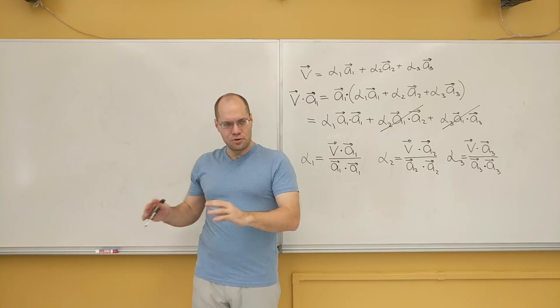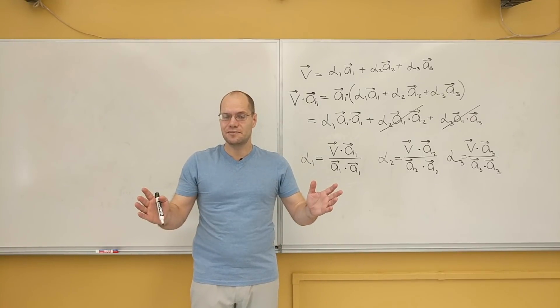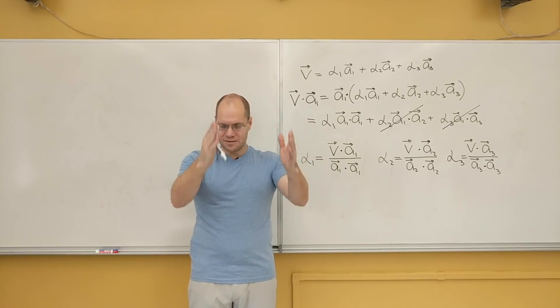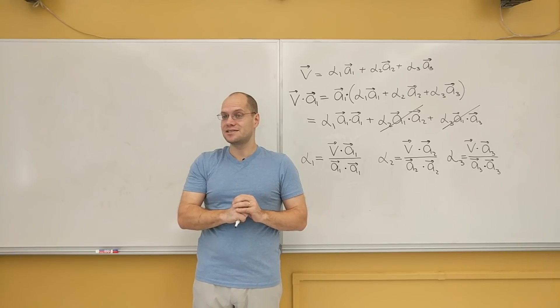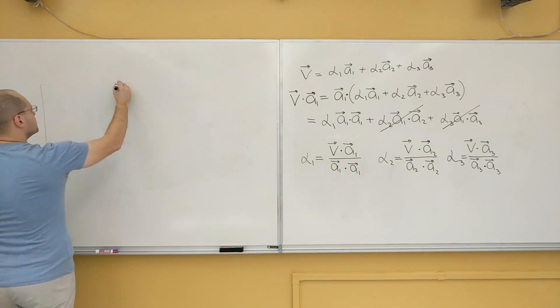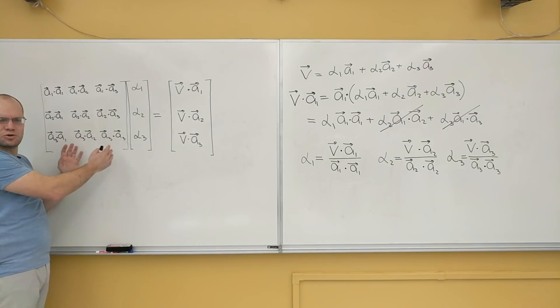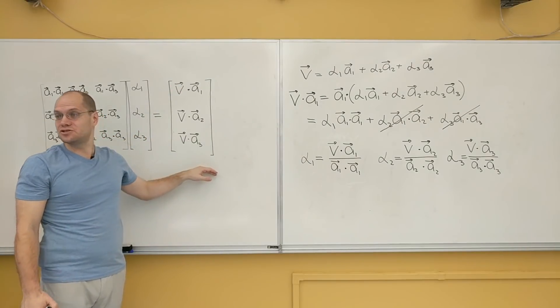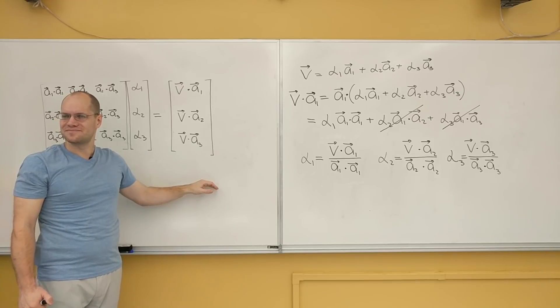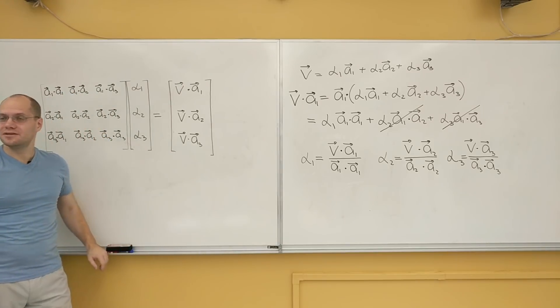So why don't you, as I'm doing it quietly on the board, write out that matrix, that linear system in matrix form. 3 by 3 matrix times alpha 1, alpha 2, alpha 3 equals 3 by 1 right hand side. Yes, it has lots of dot products, but they're just numbers. So I think when you first encounter the dot product, this looks a little overwhelming because it looks like there's so much geometry going on. But for a specific set of vectors, it's just a 3 by 3 matrix. And this is just a 3 by 3 matrix too. It's just a 3 by 1 matrix. And so you end up with a common 3 by 3 system.